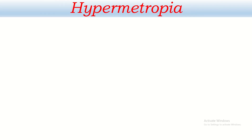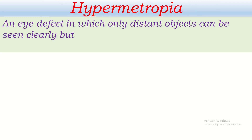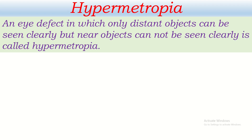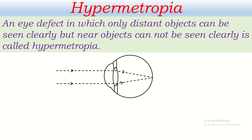Now let's talk about hypermetropia. An eye defect in which only distant objects can be seen clearly but near objects cannot be seen clearly is called hypermetropia. In the diagram, distant objects are focused on the retina — that is not the problem. But the problem is with near objects: near objects are not focused on the retina because the power of the lens is less, so it is focused behind the retina. The major problem is that the convex lens of the eye is thin and it cannot become thick according to the requirement. We need a thick lens to see near objects clearly.